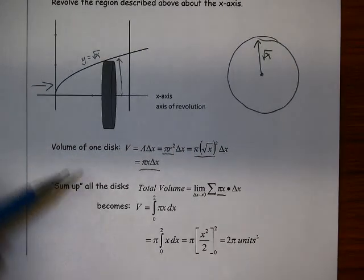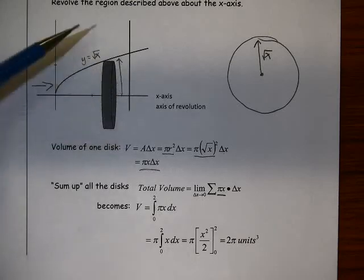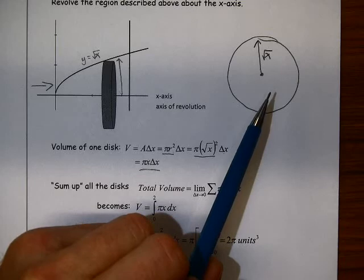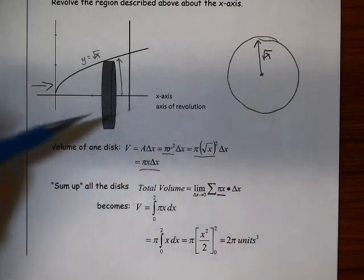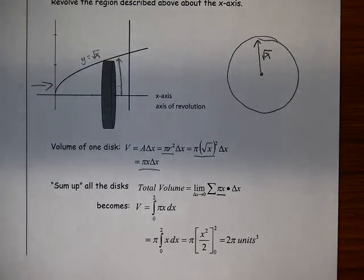So it's very much like the known cross-sections, except when we do a volume of revolution, the cross-section that we always get is a circle with a radius which is defined by the height of the function that we used.